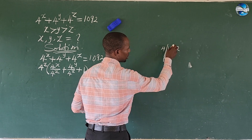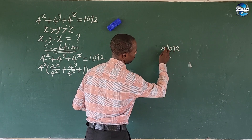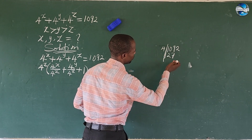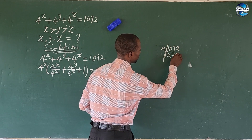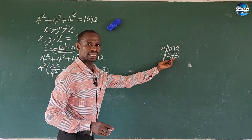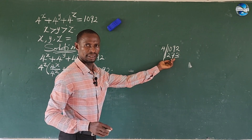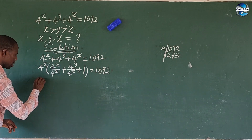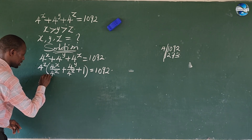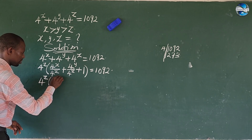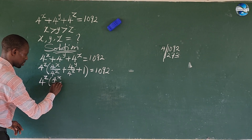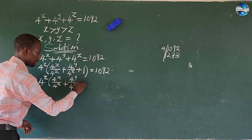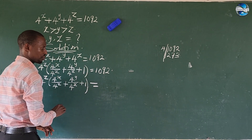Now 273 is an odd number. So we cannot split this into even and odd that way. Our expression becomes: 4 to the power of z times bracket 4 to the power of x all over 4 to the power of z, plus 4 to the power of y all over 4 to the power of z, plus 1, close bracket, equals 4 to the power of 1 times 273.